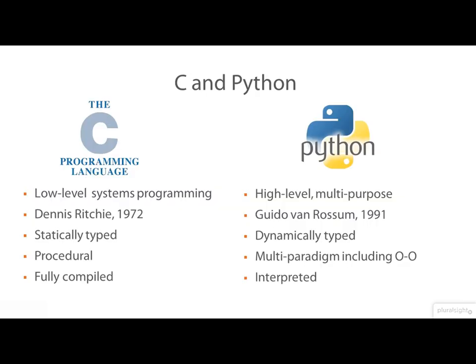Traditionally, the Linux system call interface is documented in terms of its C language bindings, and despite its age, C remains the lingua franca of systems programming. It's a statically typed language, so you have to pre-declare all your variables. It's procedural, it's fully compiled, and it results in tight, compact code.